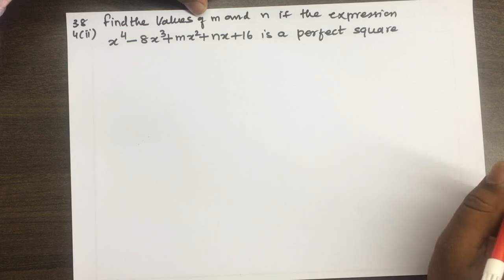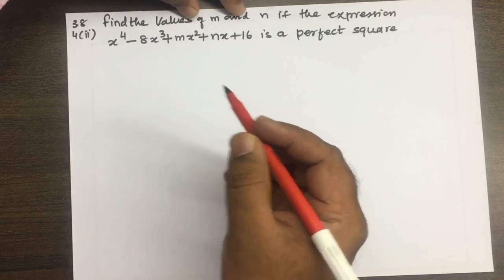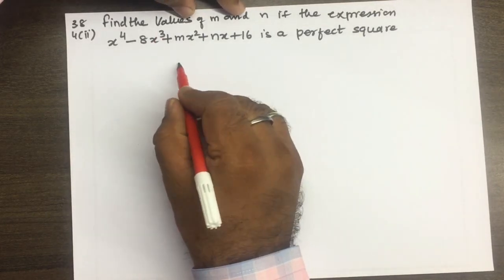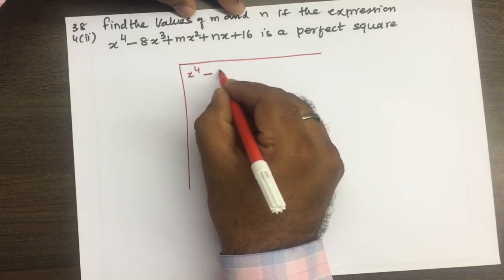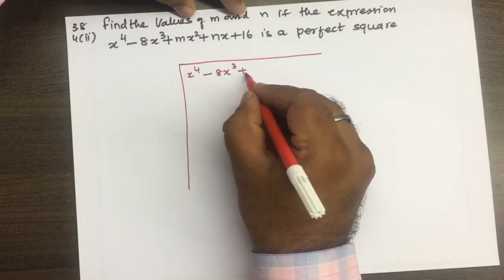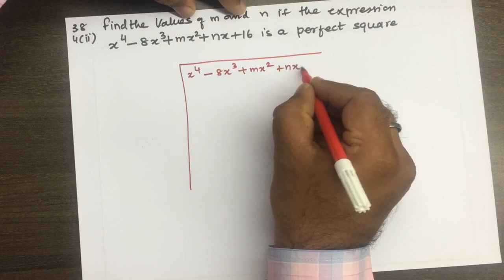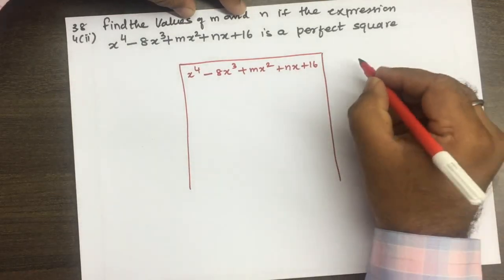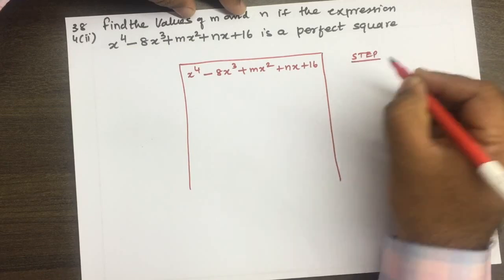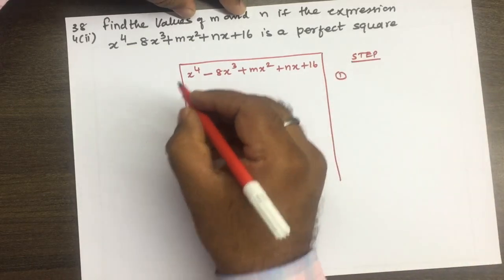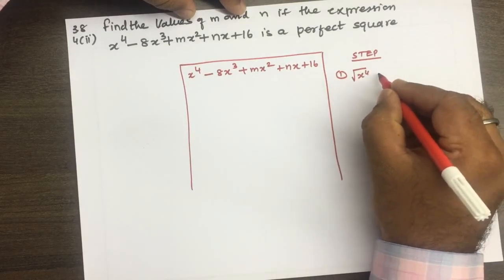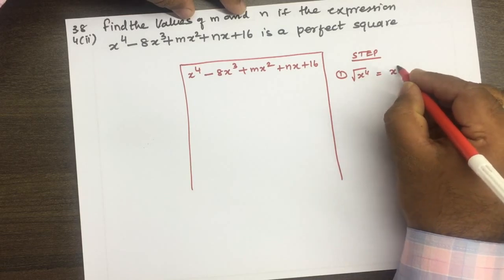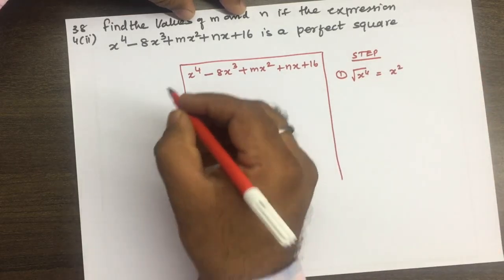Exercise 3.8. Division of the symbol of x power 4 minus 8x cube plus mx square plus nx plus 16 is a perfect square. We take x square as the square root of x power 4.